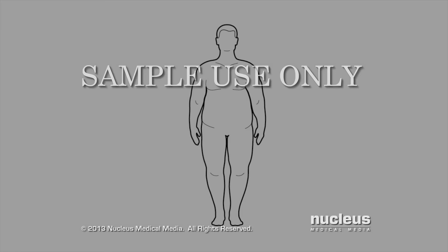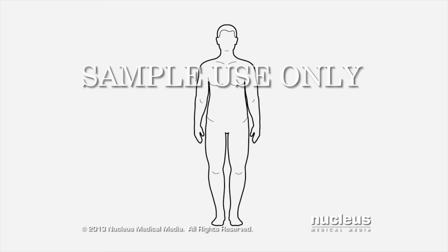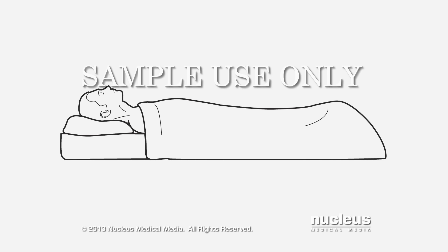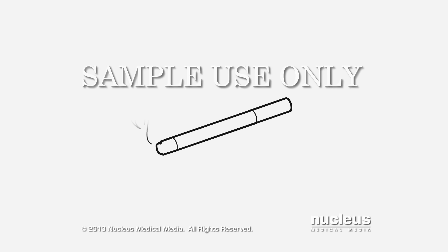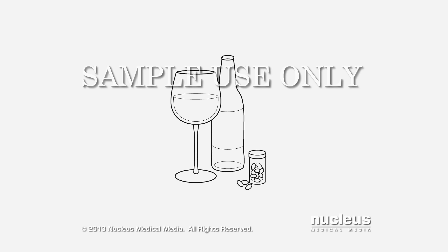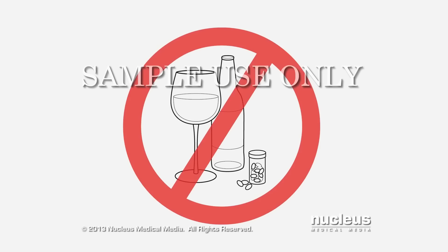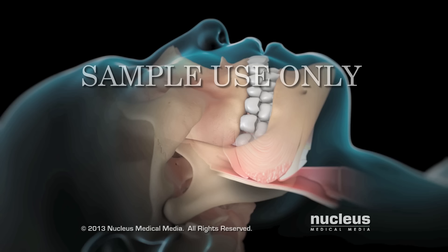Your doctor may recommend lifestyle changes to treat obstructive sleep apnea, including losing weight, sleeping on your side, not smoking, and avoiding substances that can make you sleepy, such as alcohol and sedatives.